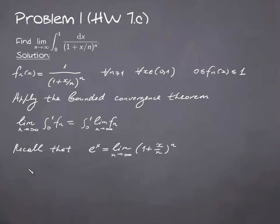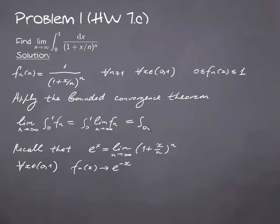So in this case, as you can see, for every point from the unit interval, fn(x) converges to the exponential function e to the power minus x. Therefore, the integral of the limit equals the integral of the exponential function, which equals 1 minus 1 divided by e.